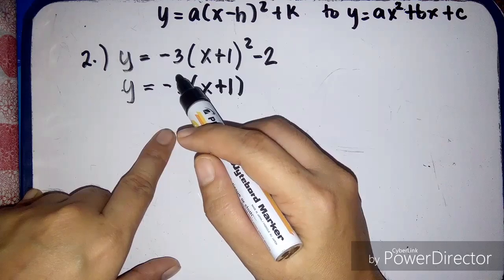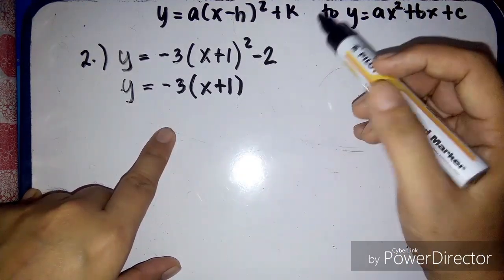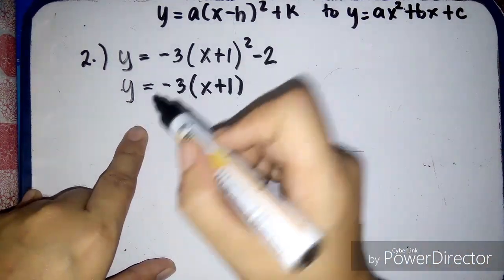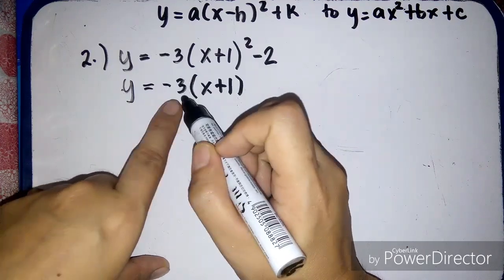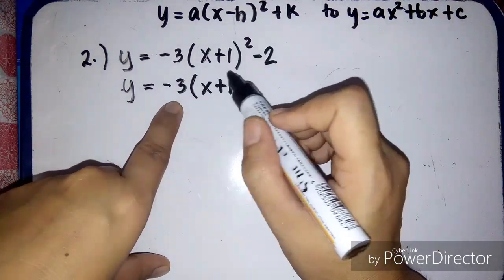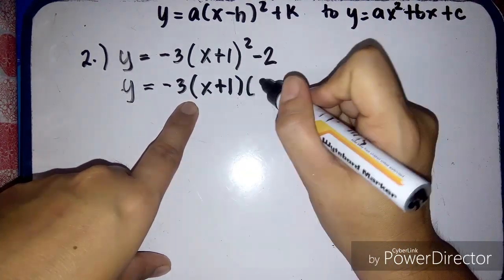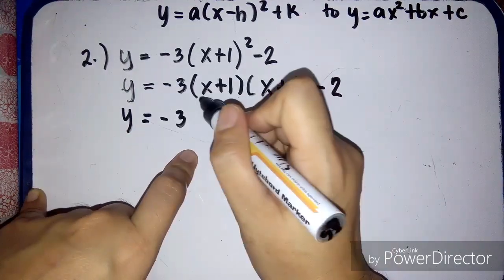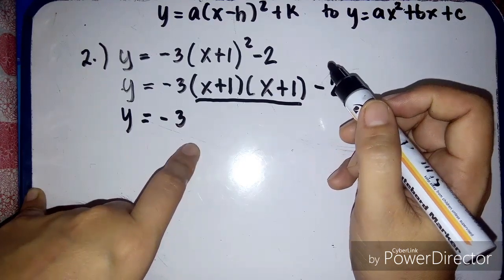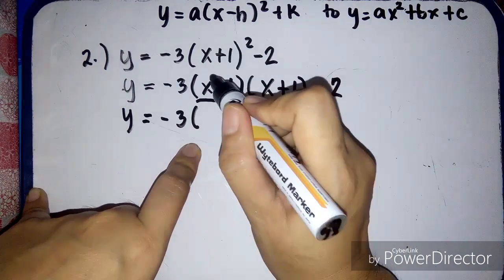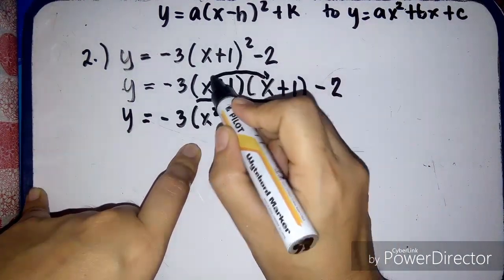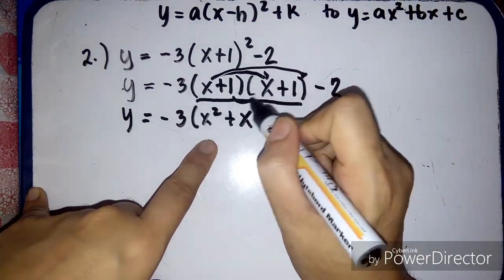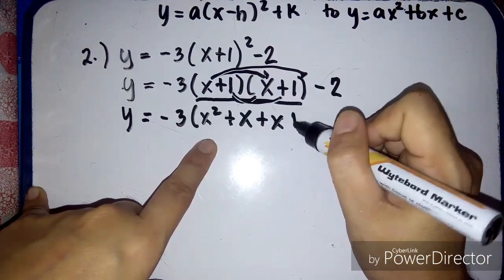Now let's do number 2: y equals negative 3 times the quantity of x plus 1 squared minus 2. This is in vertex form and we're going to transform it to general form. So y equals negative 3 times x plus 1 squared, meaning you multiply x plus 1 two times: x plus 1 times x plus 1. Using the distributive method: x times x is x squared, x times 1 is x, 1 times x is x, and 1 times 1 is positive 1.